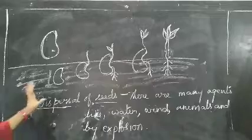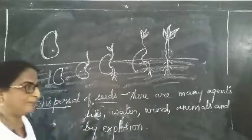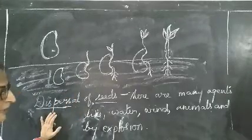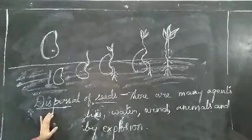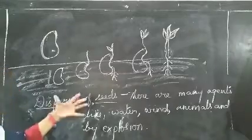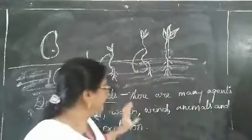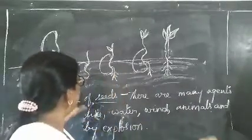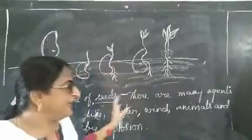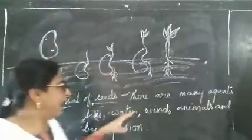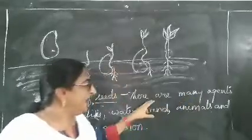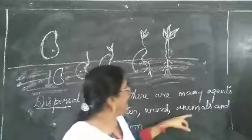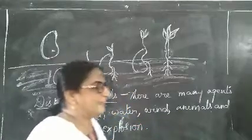Why is dispersal of seeds necessary? If so many seeds fall down at one place, they will not get sufficient air, water, and warmth — all the seeds cannot grow into new plants. So there is a need for dispersal of seeds. There are many agents like water, wind, animals, and by explosion.